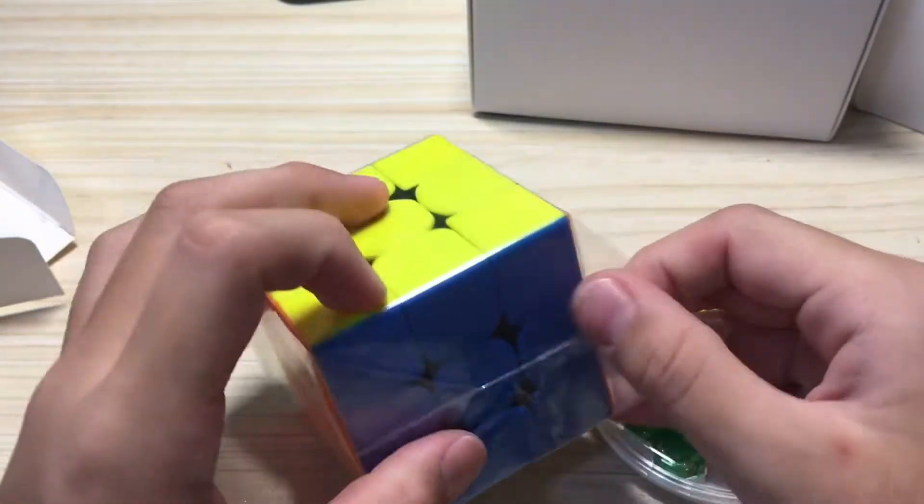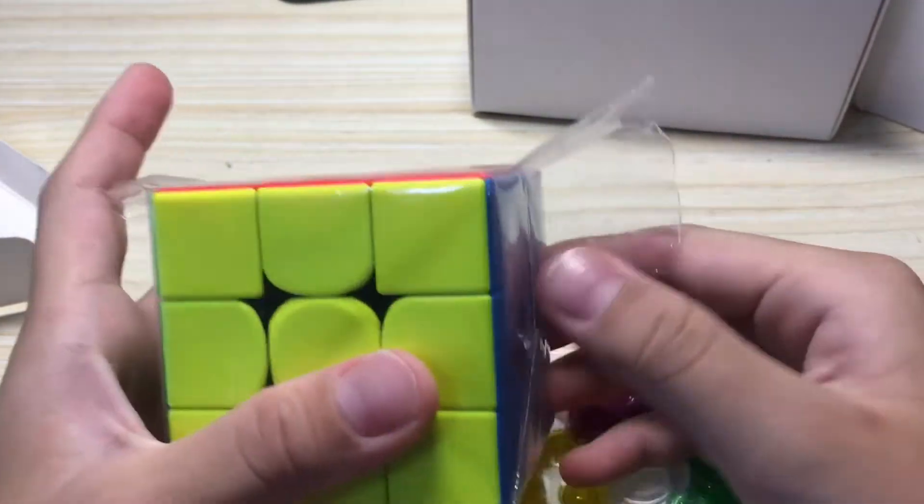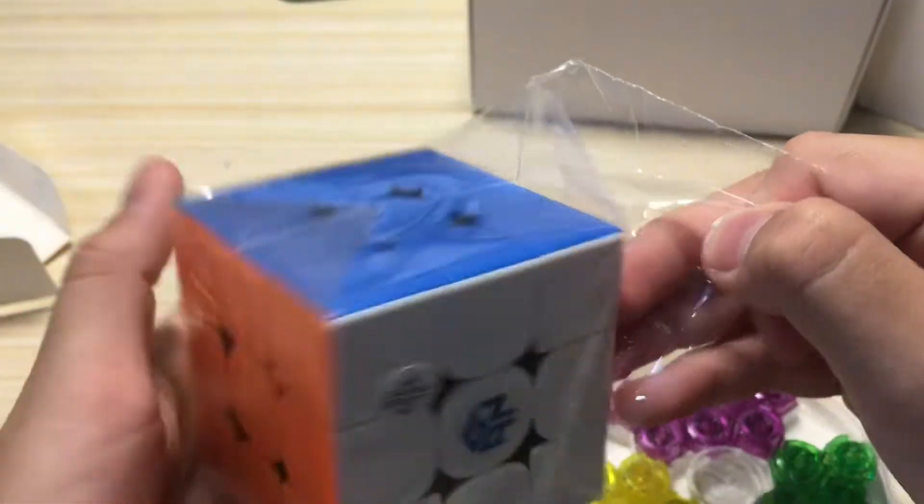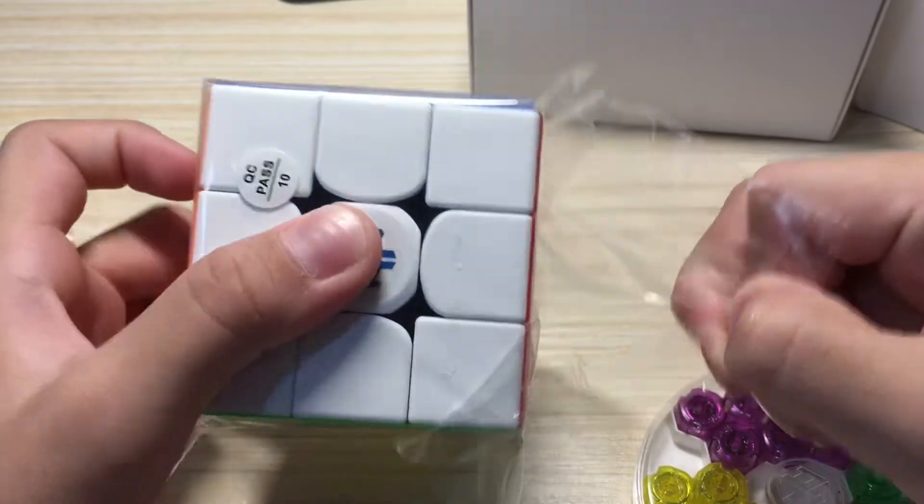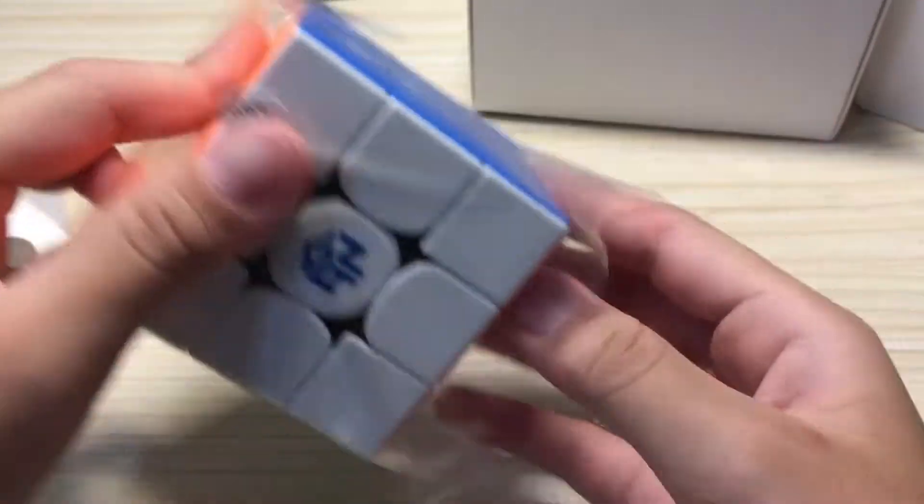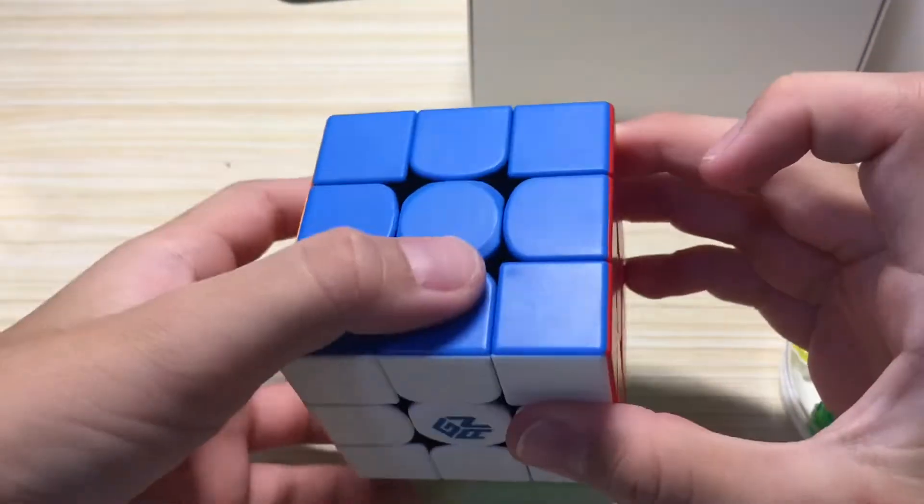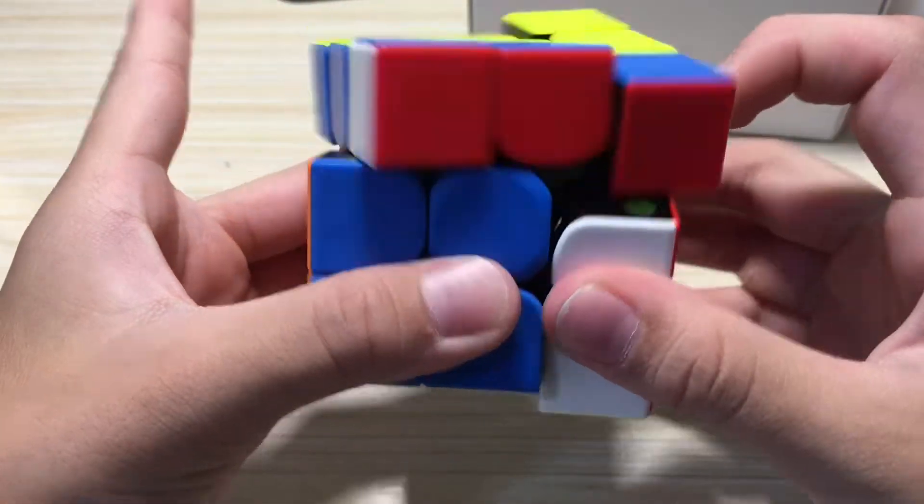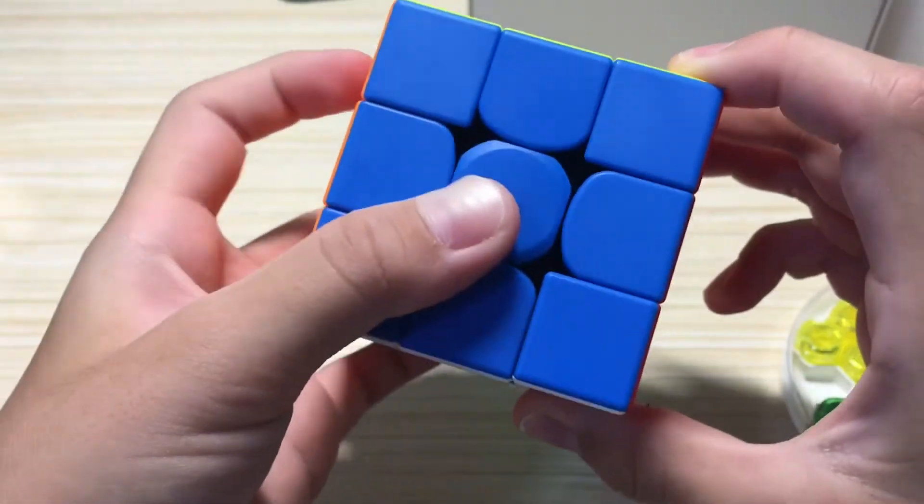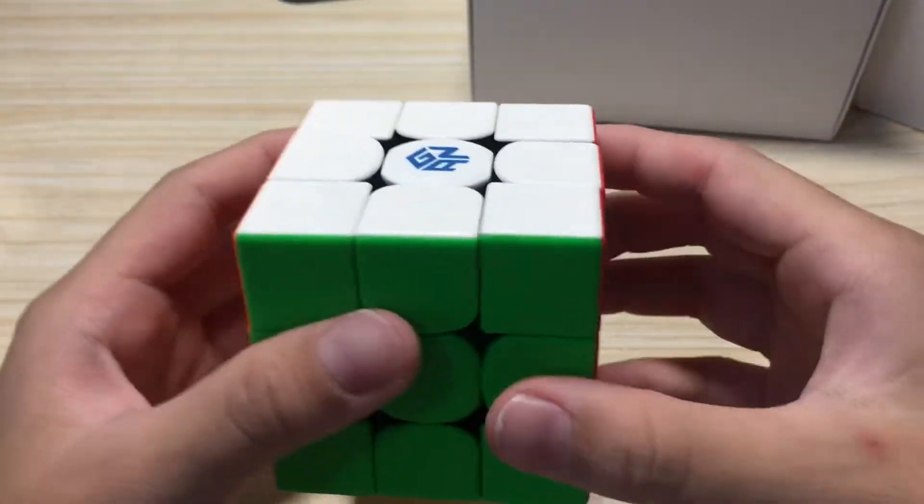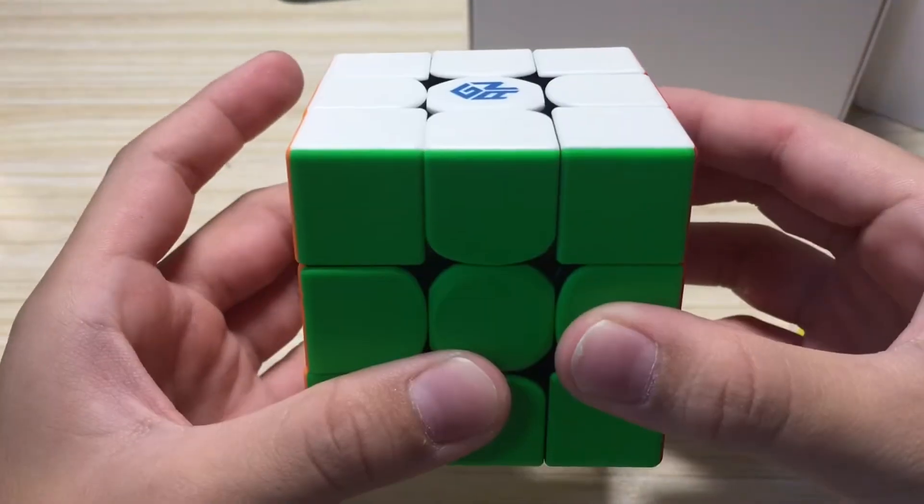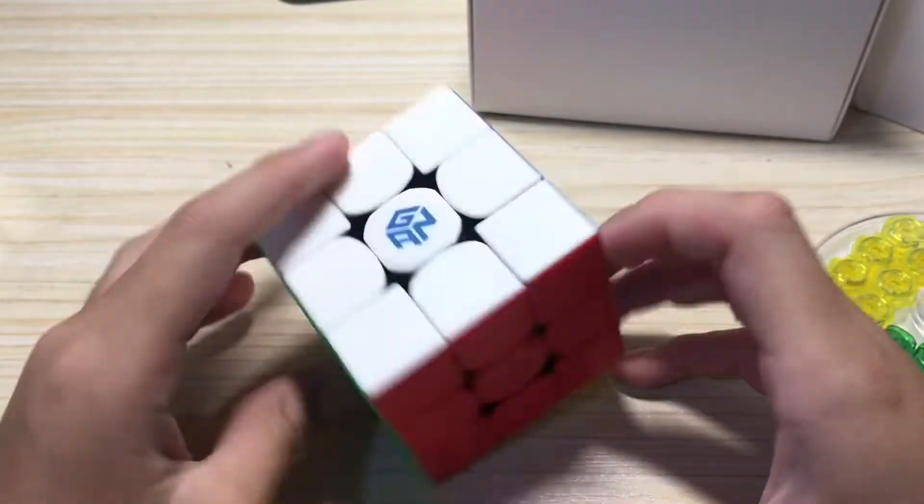...up this cube. Oh my god, this feels so nice. So this cube is actually the GAN 356M.